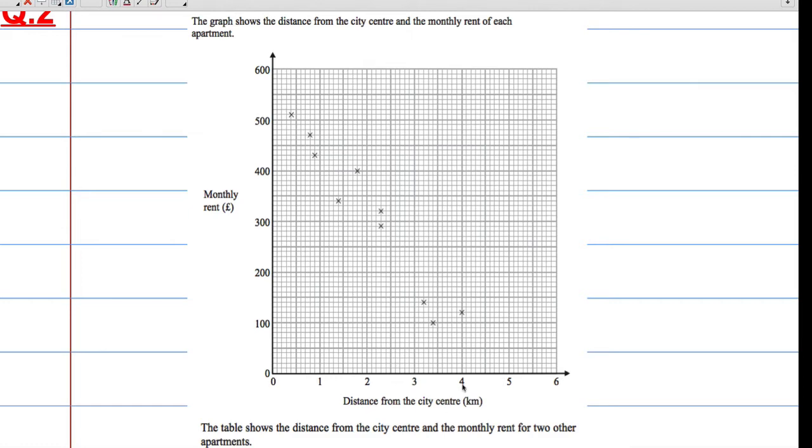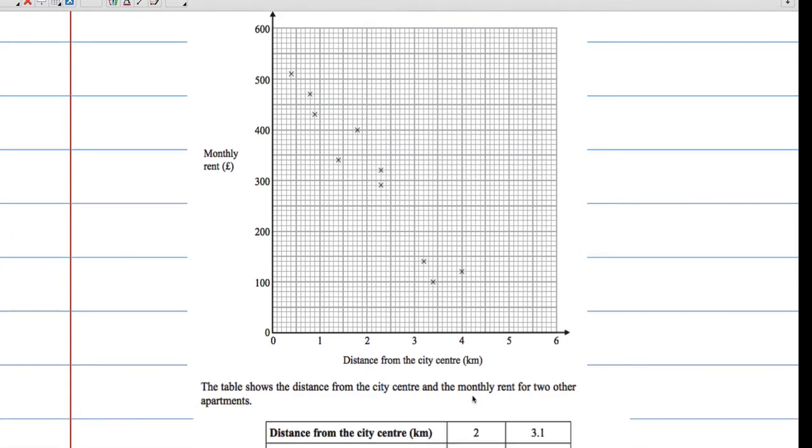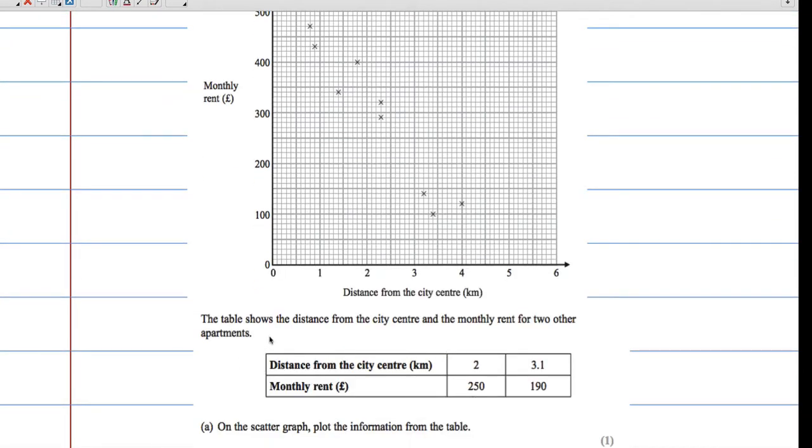We've got a table here that shows the distance from the city center and the monthly rent for two other apartments. So here we go, some more information. On the scatter graph we're asked to plot the information from the table. Fairly straightforward.